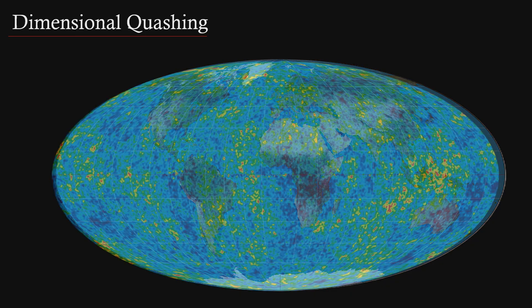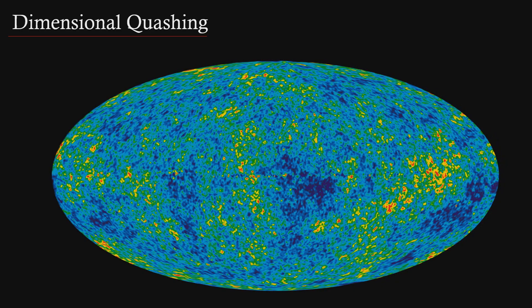This is an image of the cosmic microwave background, accidentally discovered in 1965, and it's using the same Mollweide projection. What's being shown here are traces of the radiation left over in the universe after the Big Bang.